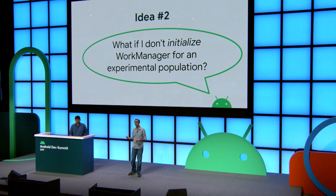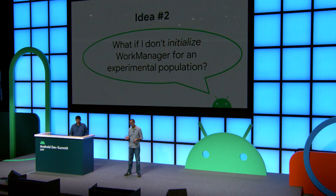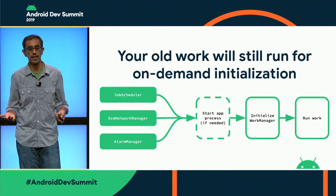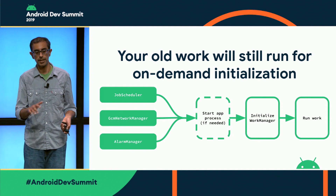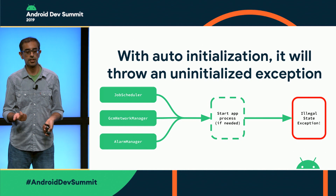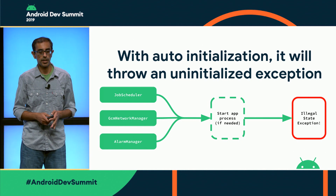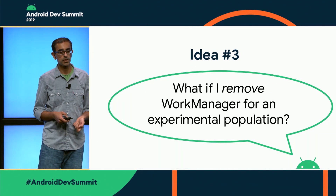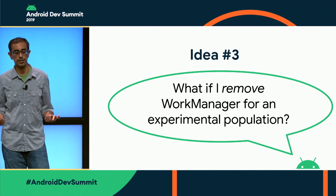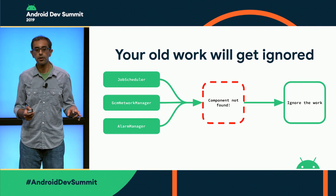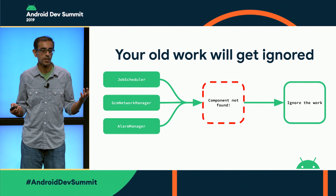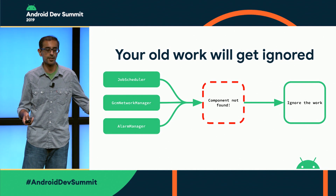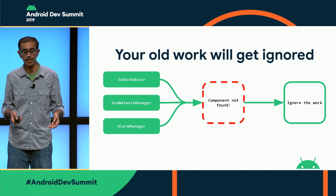Their second idea was: what if I don't initialize WorkManager for that experimental population? Your old work will still run if you use on-demand initialization, because that'll initialize WorkManager on-demand. With auto-initialization, it'll just throw an exception because it will say you wanted to run this work but WorkManager isn't initialized. Their third idea was: what if I remove WorkManager for that experimental population? Now things are looking right. Your old work will get ignored because your components are no longer found by JobScheduler, GCM Network Manager, and Alarm Manager. They may print something in Logcat saying they couldn't find this thing, and the work will be ignored.